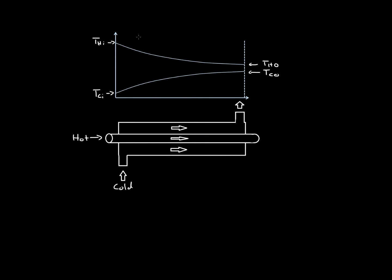We could imagine that the greatest temperature difference between them would be in the beginning, where they meet — so this is large. Then when you get further along, it would be very little, and there wouldn't be as much heat transfer, because they start having the same temperature. The rate of heat transfer is based on the temperature difference.